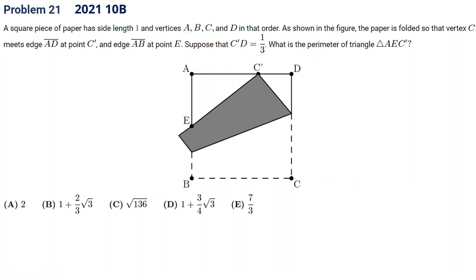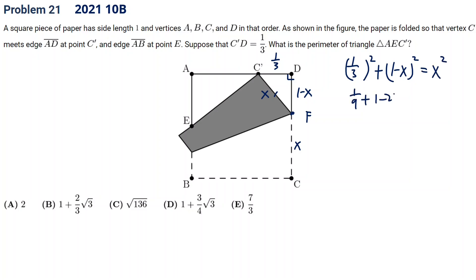Let's come back. So here we have CD is 1/3, and we know this is folded. So if we assume this is F, the point CF is equal to the length of CF, and this side is 1 minus x. So we can just solve this equation: (1/3)² + (1 - x)² = x². If we continue to solve, x² cancels. So basically 2x = 10/9, and x = 5/9. So now that we find this is 5/9, this is 4/9.